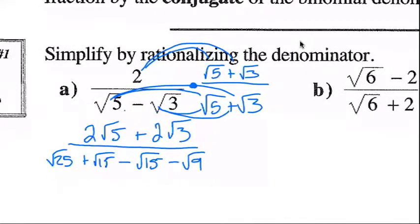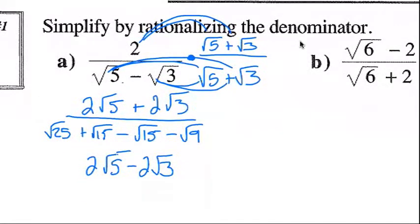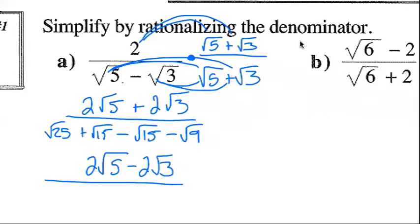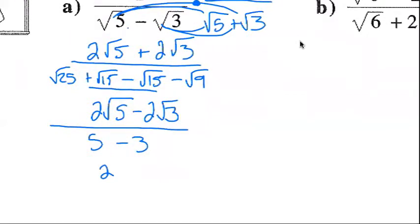Now in the numerator, nothing happens. So this is 2 square root 5 minus 2 square root 3. In our denominator, square root 25 is 5, plus root 15 minus root 15 cancel and disappear, and square root of 9 is 3, minus 3. So this works out to 2 square root 5 minus 2 square root 3, all over 5 minus 3, which is 2.